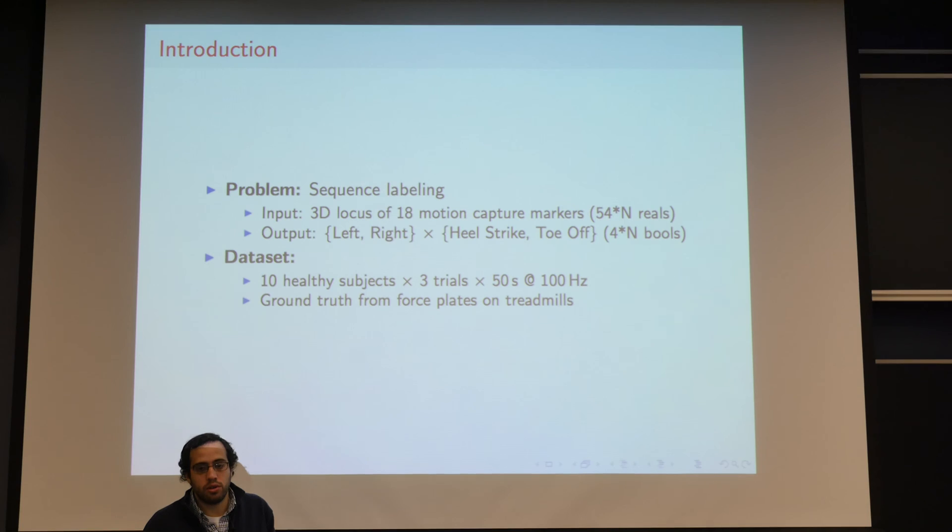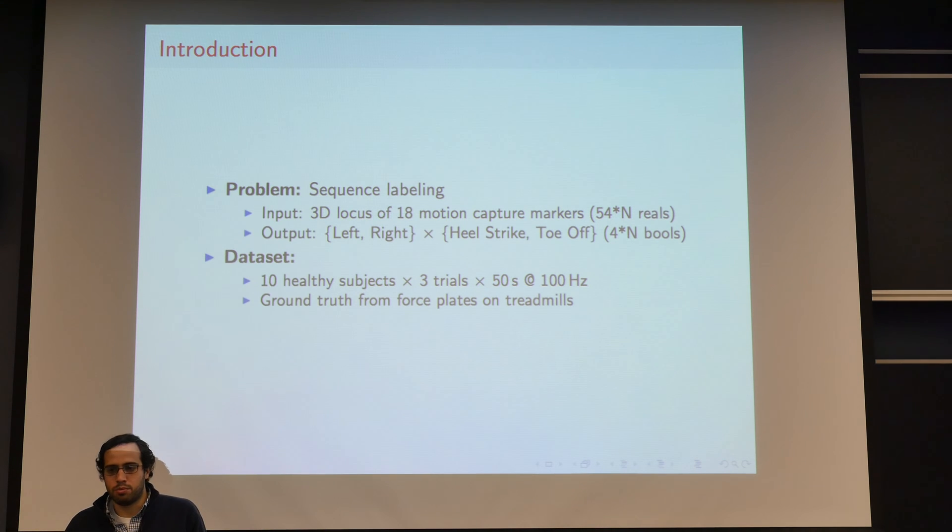What you need when you do gait analysis is to identify the gait events, which means when your leg touches the ground or when you remove it from the ground, which are called heel strike and toe off. And this is important because you usually align all your data to these gait events, and in order to do comparison and statistics on it, you need to have this well aligned.